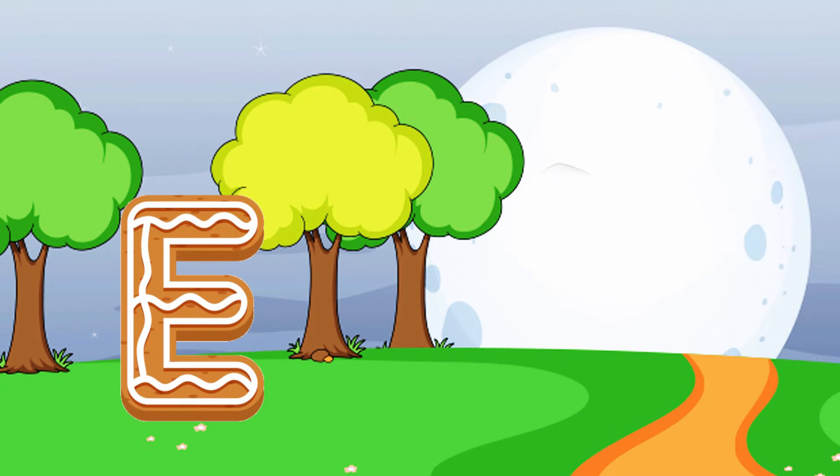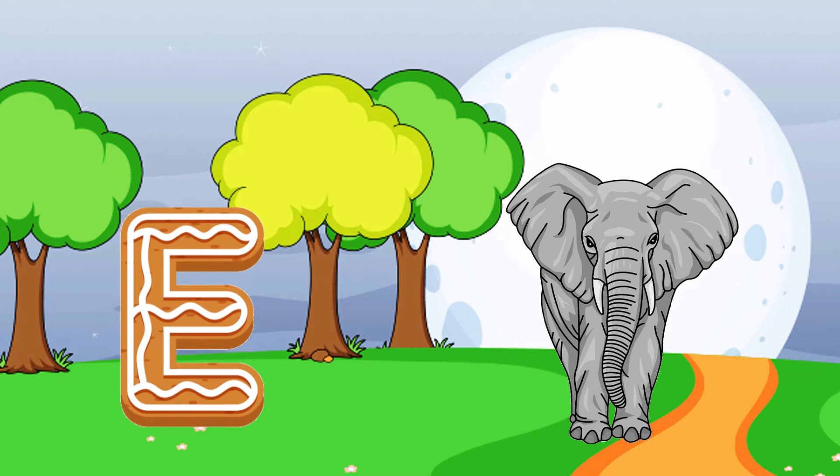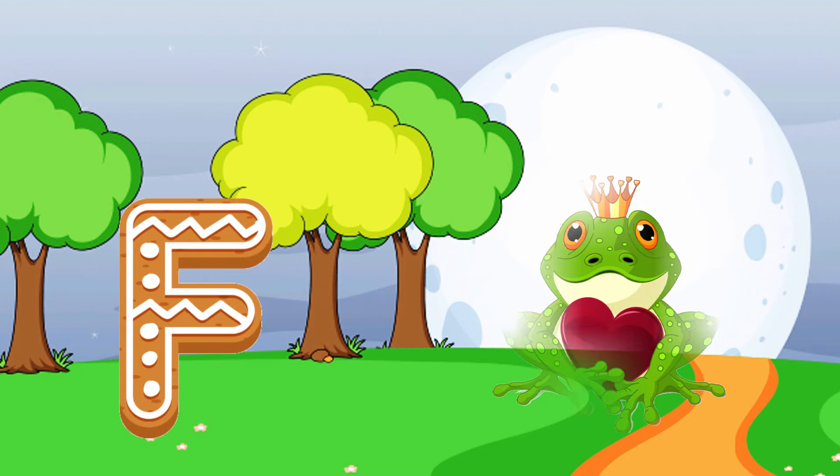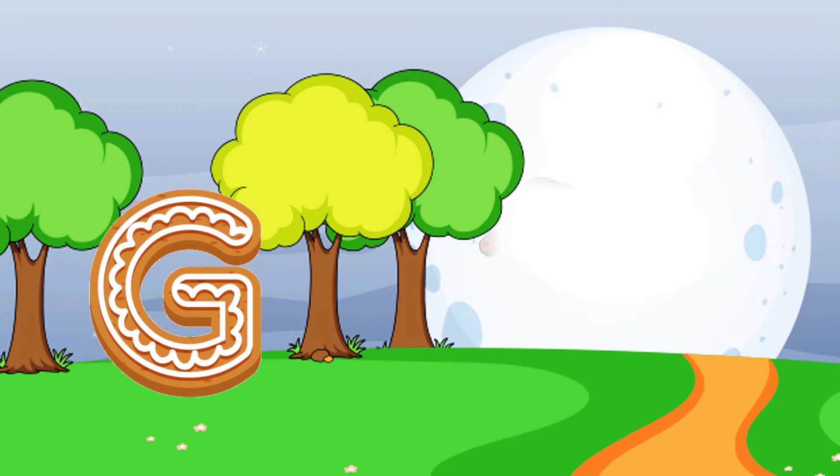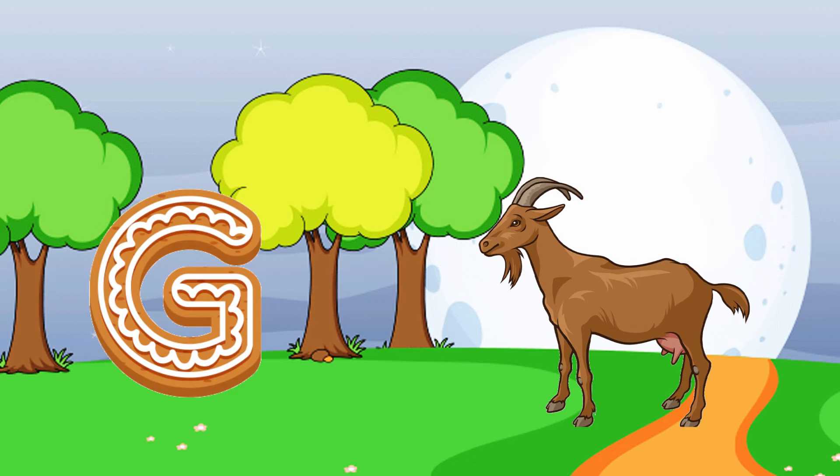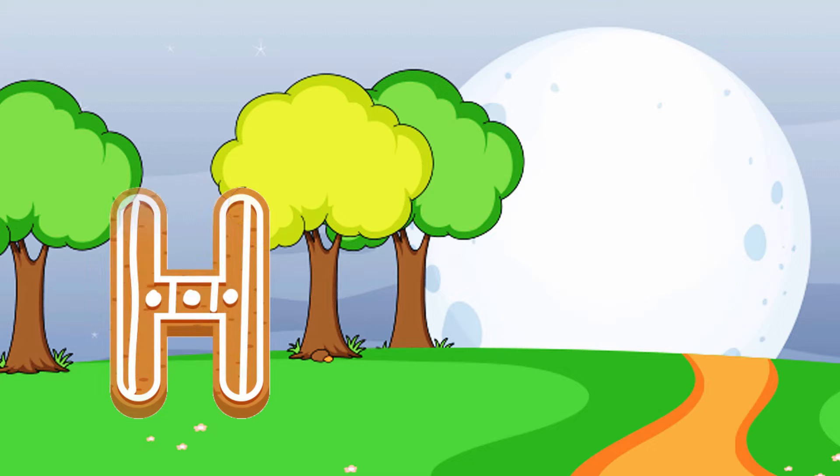E is for elephant, e-e-elephant. F is for frog, f-f-frog. G is for goat, g-g-goat. H is for hand, h-h-hand.